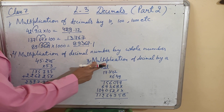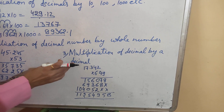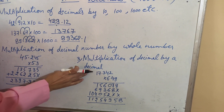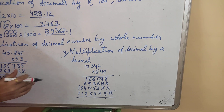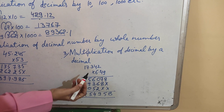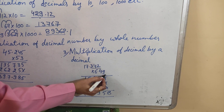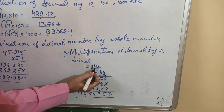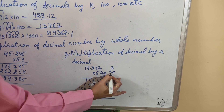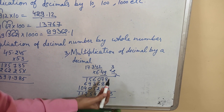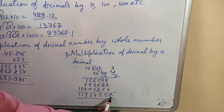Third rule: when we have to multiply a decimal by a decimal number. Here also, first we have to do the simple multiplication as we did in the previous one. Now, you have to count the decimal places of both the multiplier and the multiplicand. Here there are 3 digits and here there are 2 digits. 3 plus 2 equals 5. In the answer, counting from the right side, after 5 digits we have to put the decimal.